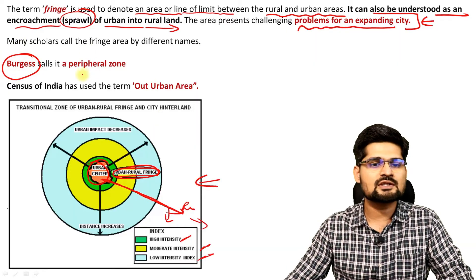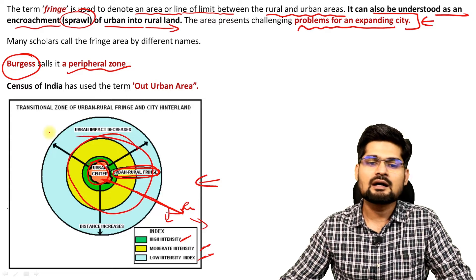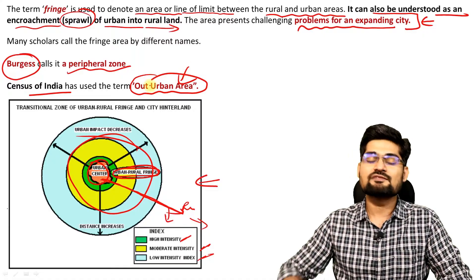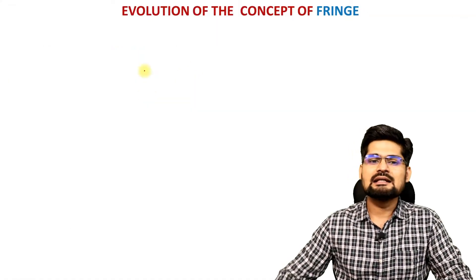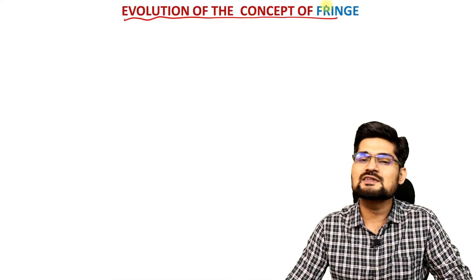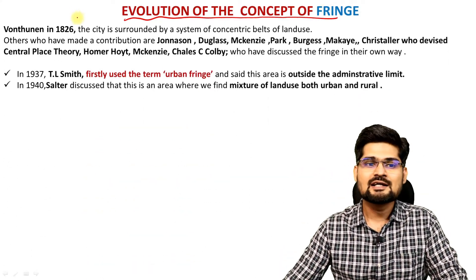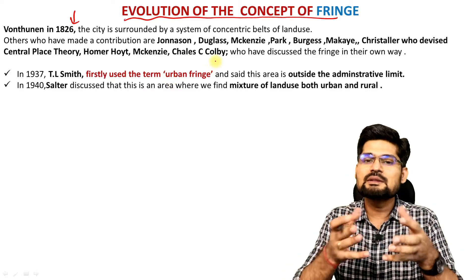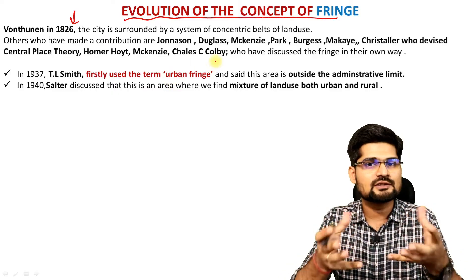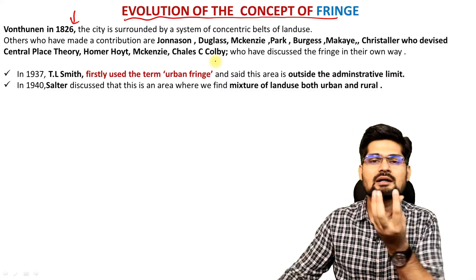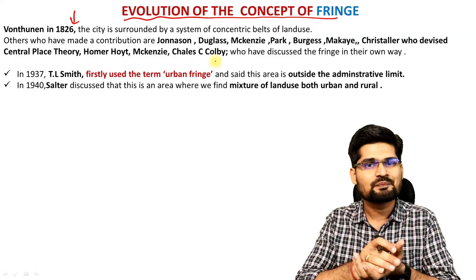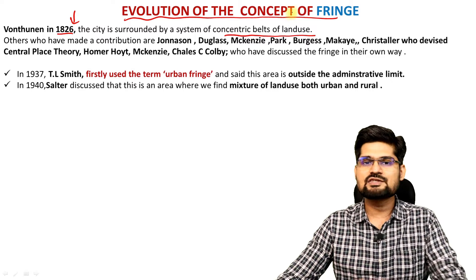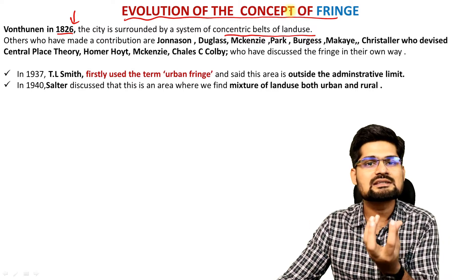Many scholars like Burgess called it a peripheral zone — it's in the periphery of the main urban area. The Census of India defines it as 'out urban area' as a phrase as well. To understand the prominence of this concept, let's look at its evolution and terminologies. Right from von Thunen's concept — where he talks about a single market area and land usage around it — in 1826 he talked about concentric zonations which are the outskirts of the main urban concentration.